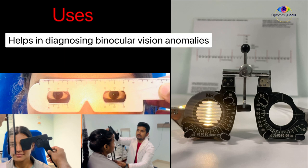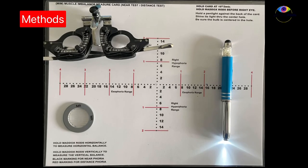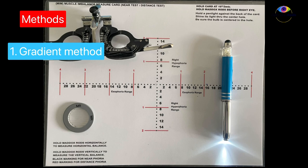And the AC/A ratio is highly useful in diagnosing and managing binocular vision anomalies. There are various ways to measure AC/A ratio, but I will explain the two easiest ways to calculate it. First will be gradient method and the second will be calculated method.